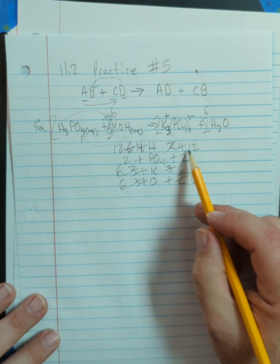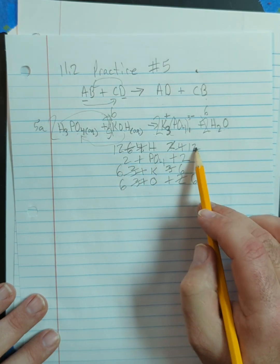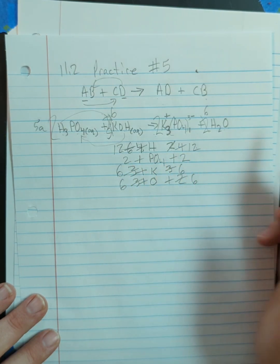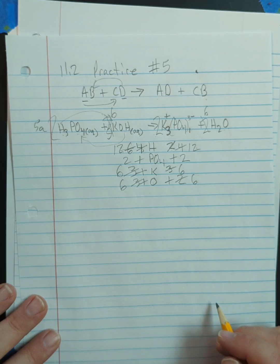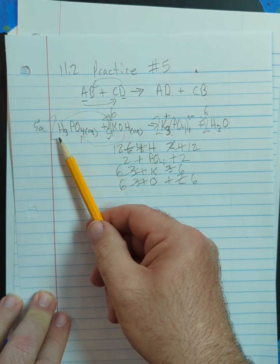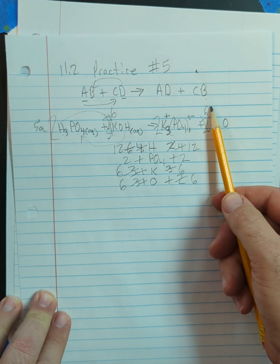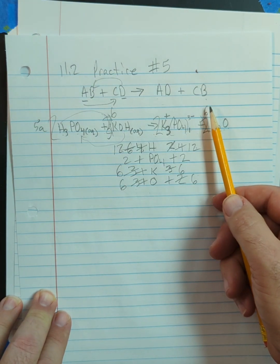So I have 12 hydrogens on both sides. So that balances. The trouble is, if you'll notice, two, six, two, and six, these are all divisible by two.